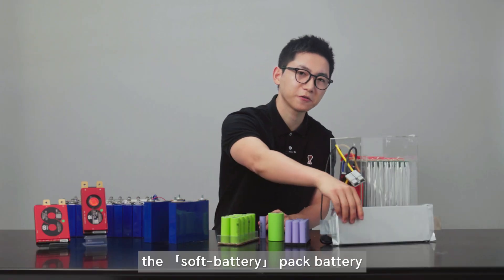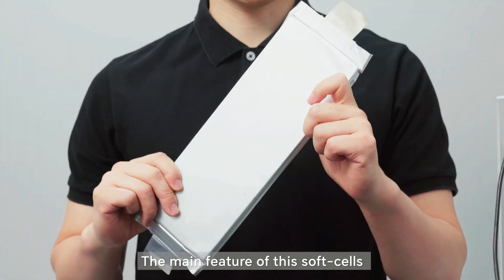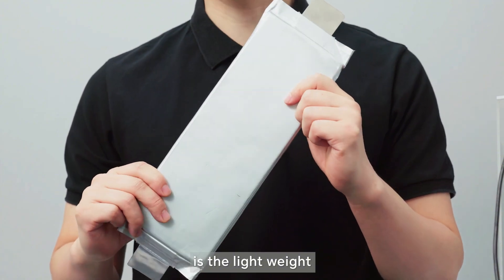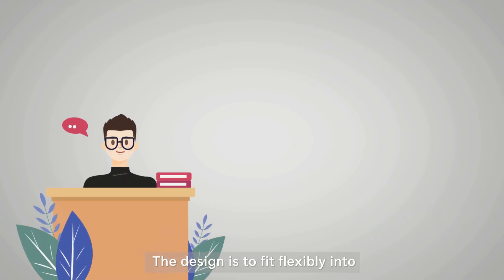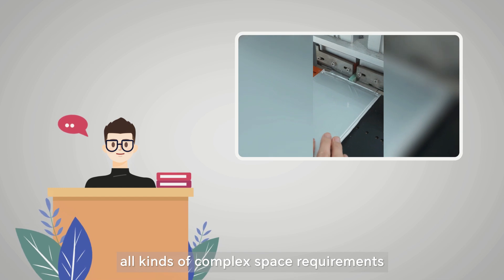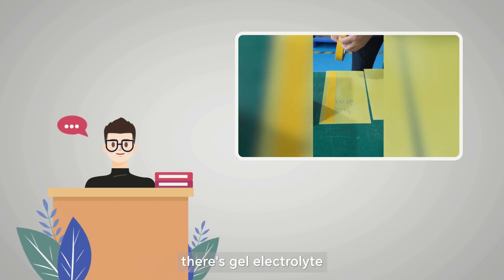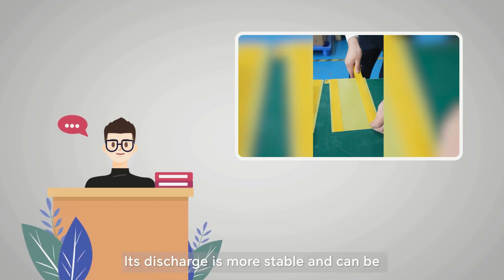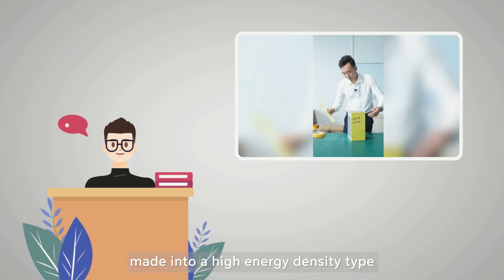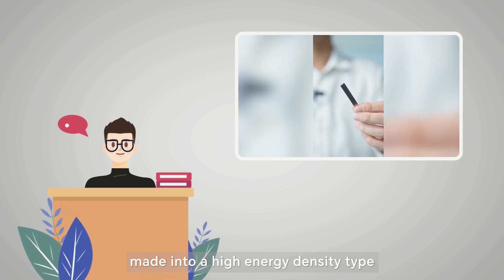Next is the soft battery pack battery. The main feature of this soft battery pack cells is the lightweight. The design is to fit flexibly into all kinds of complex space requirements. Inside the soft battery pack cells, there's gel electrolyte. Its discharge is more stable and can be made into a high-energy density type, able to provide a lot of power in a small size.